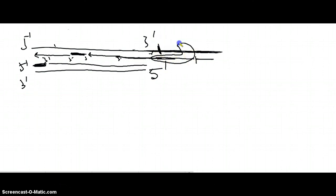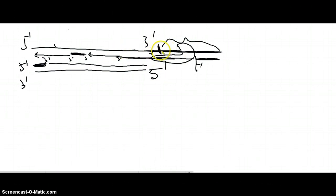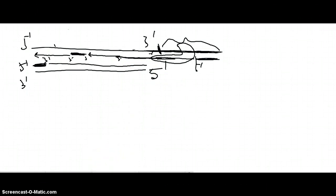Now the parental strand has been elongated so you can place an RNA primer and perform replication in the 5' to 3' direction, completing replication of the entire parental strand. The replication is now complete for this strand. If you have any further questions, you can send me a mail. Thank you for watching.